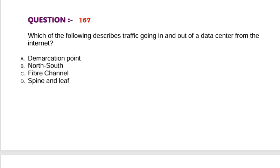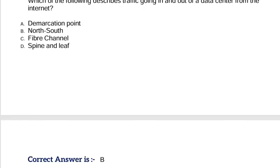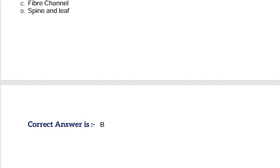Question: Which of the following describes traffic going in and out of a data center from the internet? Option A, demarcation point. Option B, north-south. Option C, fiber channel. Option D, spine and leaf. Correct answer is Option B.